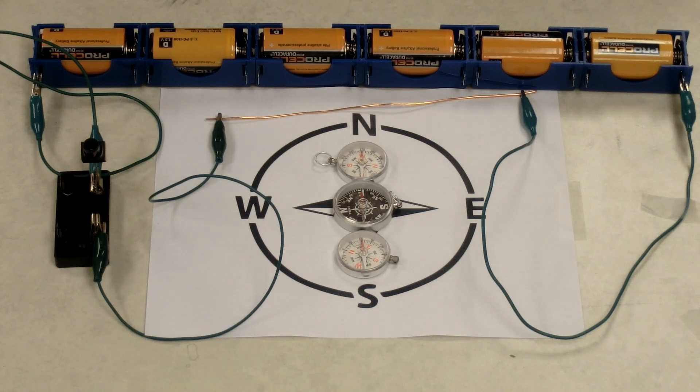In 1820, Danish physicist-chemist Hans Christian Oersted noticed that whenever current from his voltaic pile was switched on and off, a compass needle placed near the wire deflected from true magnetic north. Whenever the current was turned off, the compass needle returned to its original orientation.